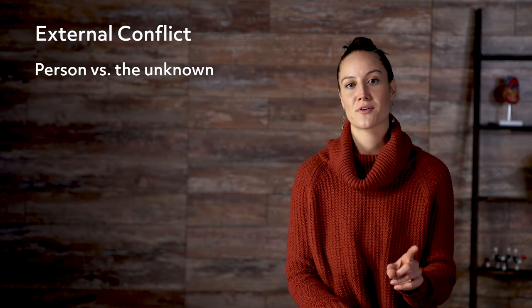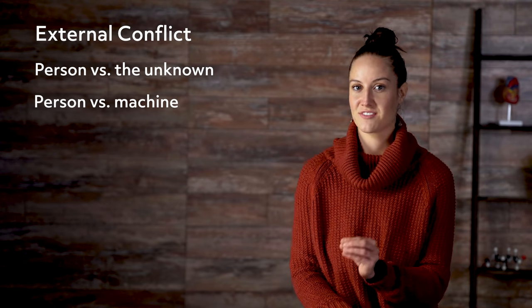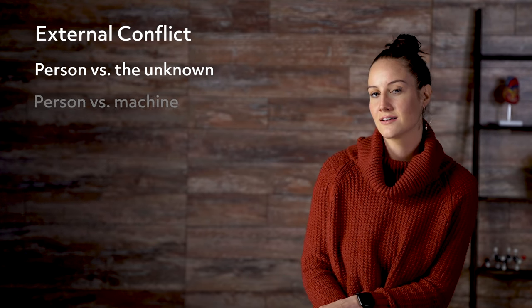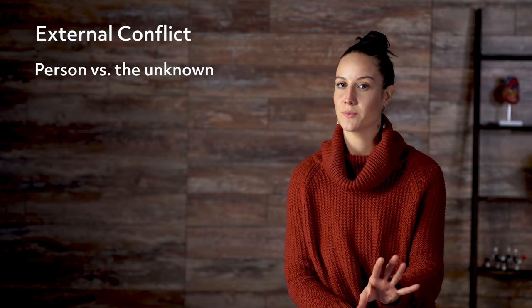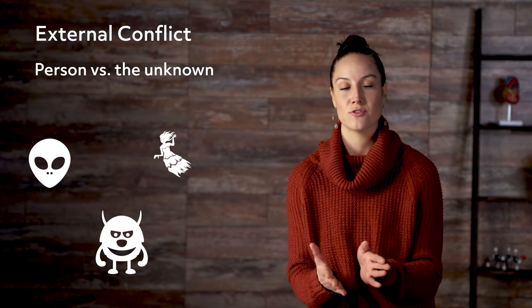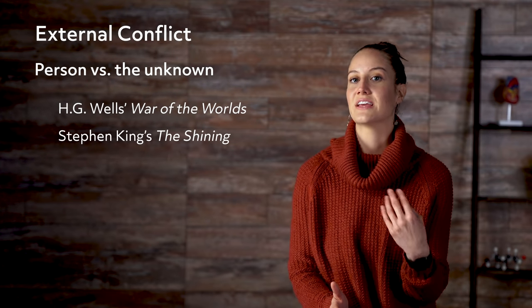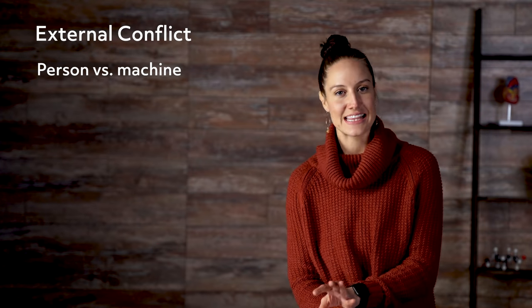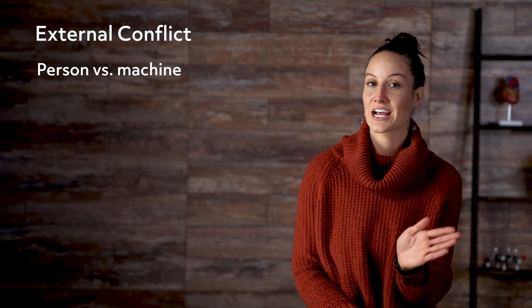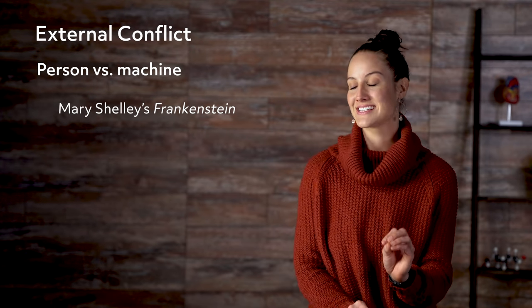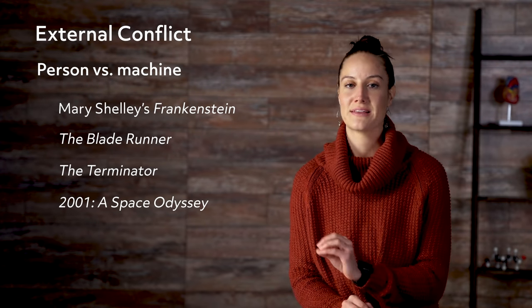Remember those other two categories mentioned earlier? Some argue that person vs. the unknown and person vs. machine should also be included in the list. Person vs. the unknown is an external conflict caused by something outside human understanding, such as aliens, monsters, or the supernatural — think H.G. Wells' War of the Worlds or Stephen King's The Shining. Person vs. machine is a theme that places the main character against technology. A classic example is Mary Shelley's Frankenstein, though this conflict is also common in modern science fiction — think Blade Runner, The Terminator, and 2001: A Space Odyssey.